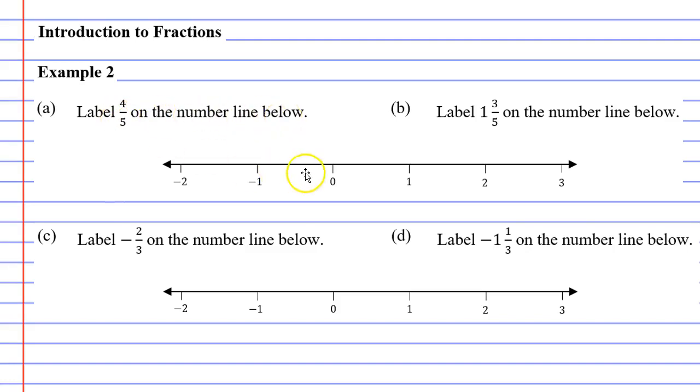So this fraction is going to be somewhere between the 0 and the 1, and what you do is you look at the denominator. The denominator is 5 and we learn that if it's a denominator of 5 you cut your shape into five pieces. So what we'll do is I'm actually going to draw four lines equally spaced between the 0 and the 1 like so.